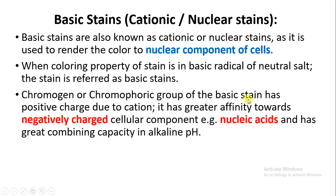The basic stain actually has a positive charge. Why? Because cations are present in them. As we know, positive charge is always attracted towards negative charge. So basic stains have a positive charge due to the presence of cations, and therefore have a greater affinity towards the negative charge which is present in the nucleic acid.